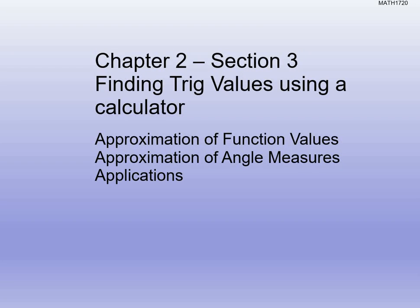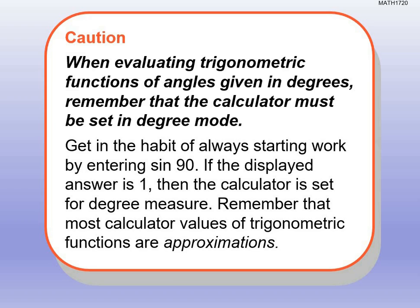We're getting into Chapter 2, Section 3, learning how to use our calculators to approximate values of angles and ratios. We want to approximate function values, angle measures, and different applications. Also, if you've ever looked at your calculator and noticed there's no secant, cosecant, and cotangent button, we need to figure out how to calculate those.